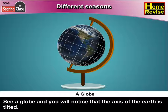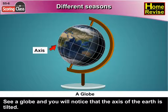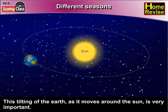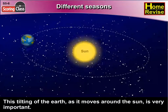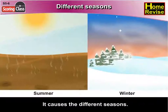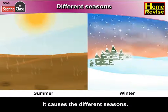Different seasons. See a globe and you will notice that the axis of the earth is tilted. Now the tilting of the earth as it moves around the sun is very important. This is because it causes the different seasons.